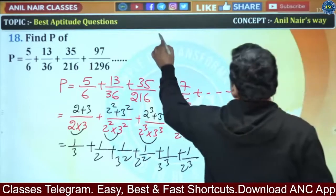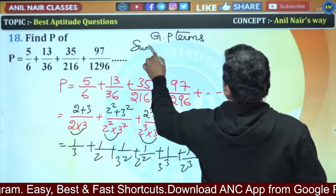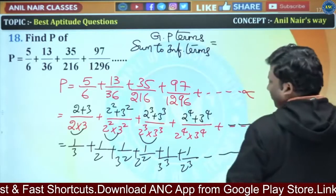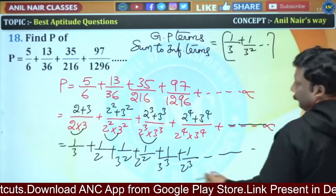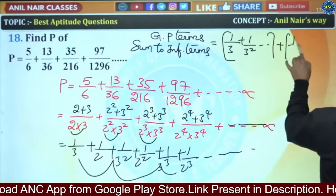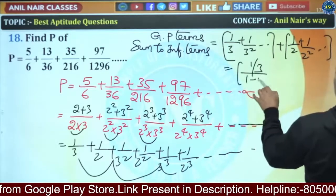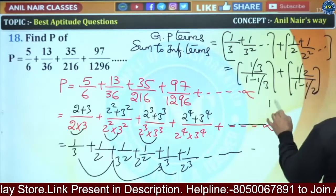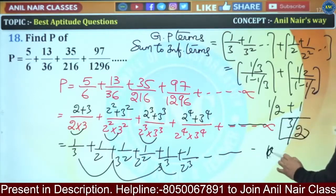This is a GP series — sum to infinite terms. The odd-positioned terms give 1/3 + 1/3² + ... and the even-positioned terms give 1/2 + 1/2² + ... Using the formula a/(1−r): for the first sub-series, a=1/3, r=1/3, giving (1/3)/(2/3) = 1/2. For the second, a=1/2, r=1/2, giving (1/2)/(1/2) = 1. Total answer is 1/2 + 1 = 3/2.